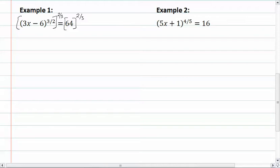So we have 3x minus 6 to the 1 power, or in other words, 3x minus 6, equal to the cubic root of 64 raised to the second power. So we get 3x minus 6 equal to 16.